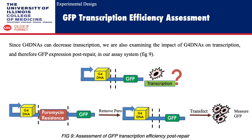Since G4 DNAs can decrease transcription, we are also examining the impact of G4 DNAs on transcription and therefore GFP expression post-repair in our assay system. As shown in figure 9, we first plan on removing the puromycin resistance marker and then re-ligating the DNA to create puromycin-removed versions of the plasmid, transiently transfecting these into HEK293 cells and measuring GFP.